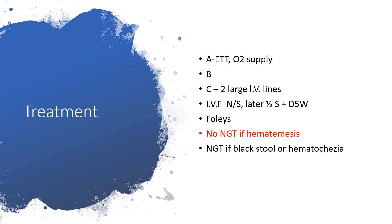The circulatory system: what is the blood pressure? What is the heart rate? Any dehydration? Give IV fluid — two large IV lines. Normal saline first, later on have saline with D5 for maintenance. Foley catheter. No NG tube here because we are dealing with hematemesis. If you are dealing with black stool or hematochezia, you can pass an NG tube.